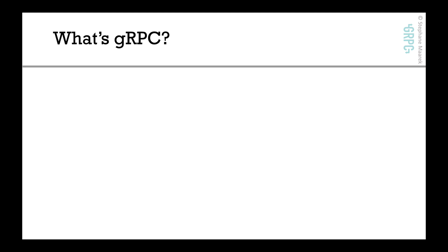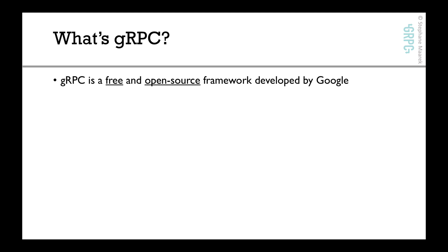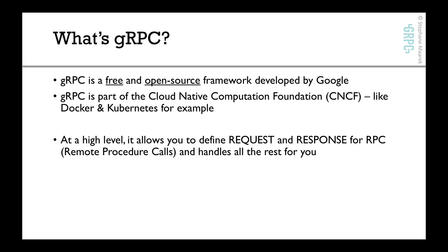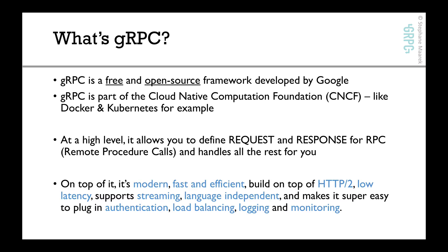So what's gRPC — what is this thing that solves our problems? gRPC is a free and open-source framework developed by Google, with Square and other companies. gRPC is now part of the Cloud Native Computation Foundation (CNCF), just the way Docker and Kubernetes are also part of this project. At a high level, gRPC allows us to define requests and responses for RPC calls — remote procedure calls — and handles everything for you. It's modern, fast and efficient, built on top of HTTP/2, low latency, supports streaming, is language independent, and makes it super easy to plug in authentication, load balancing, logging, and monitoring.